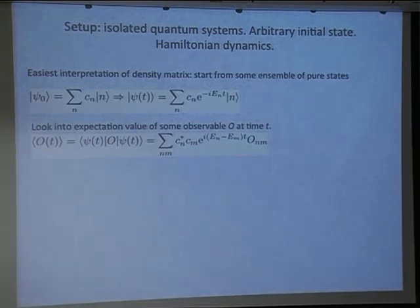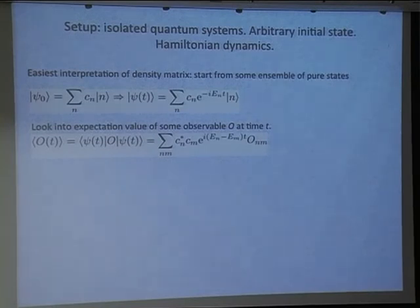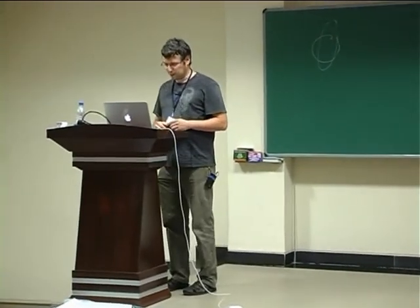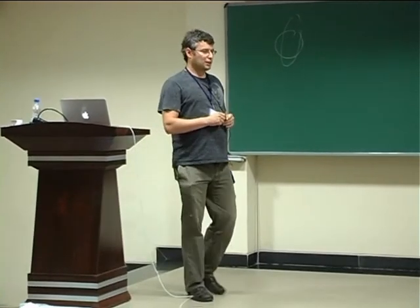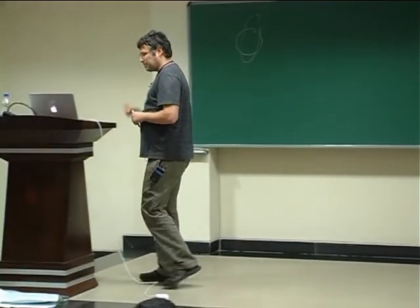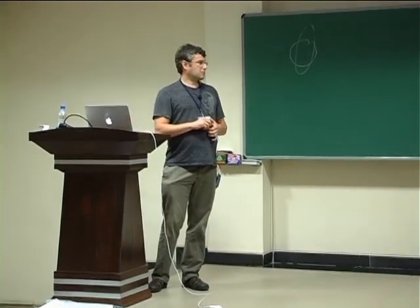Let me introduce the density matrix. I'm sure everyone here knows what it is, but there is lots of confusion. Sometimes people say if you know the density matrix of the universe you can measure everything — which is completely wrong. If you have the density matrix of the universe and exponentially many copies of the universe, then you can measure it. This makes a really big difference — sometimes that difference is not important, but sometimes it is very important.